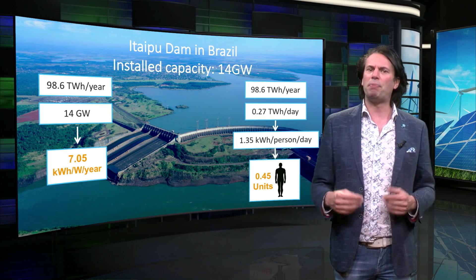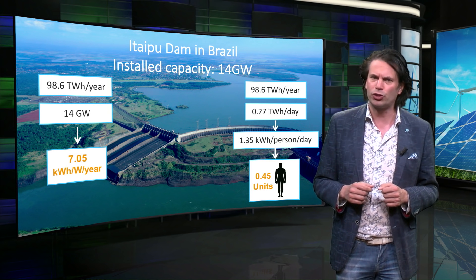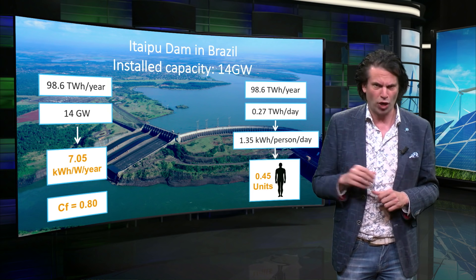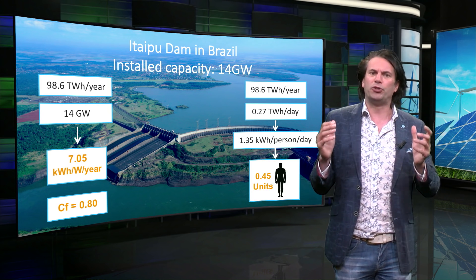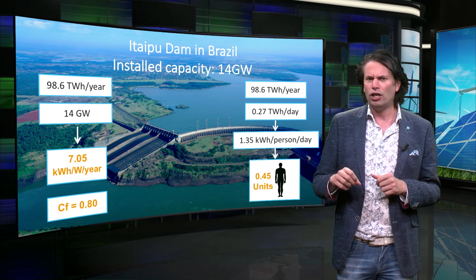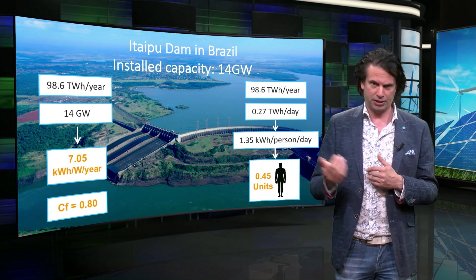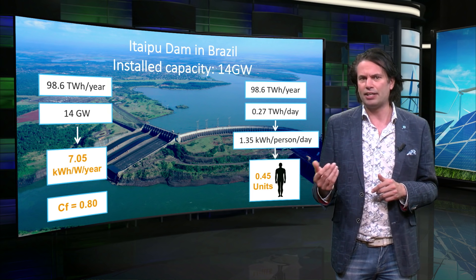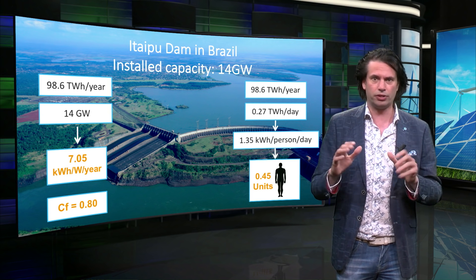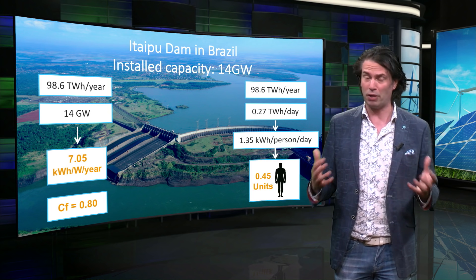Another parameter used in the industry to compare the production of different power plants is the capacity factor. It is an easy tool to estimate energy production over a period of time. The Itaipu dam has a capacity factor of 0.80, which is the annual production divided by the installed capacity and the hours in a year. So on average the dam produces 80% of the time electricity at maximum capacity. For fossil fuel plants like gas and coal plants, the capacity factor can be very close to 1, meaning they will run almost continuously at installed capacity — something electricity grid operators are very keen on to ensure stability of the grid.